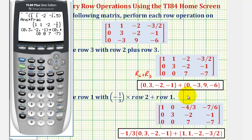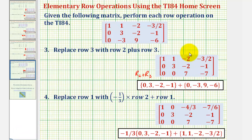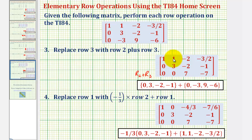For our last row operation, we want to use this matrix and replace row one with negative one-third times row two plus row one. Notice that by doing this, we'll obtain a zero in this entry, because negative one-third times three is negative one, plus one is zero. On the calculator, we'll enter negative one-third times row two plus row one.